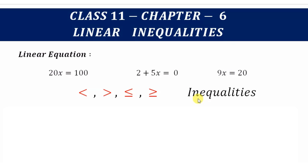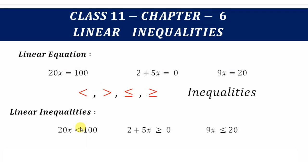Now talking about inequality: an expression which has these signs in between will be called an inequality. For example, 20x is less than 100; 2 plus 5x is greater than or equal to 0; 9x is less than or equal to 20. They are not equal, that's why they are called inequalities.